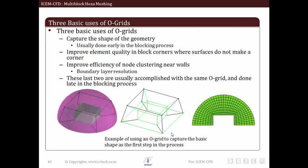Till now we have talked a lot about O-Grid. Now let us quickly see why we use O-Grid. O-Grid helps us in a lot of aspects. Number one, to capture exact shape of geometry. Secondly, we improve element quality in block corners where surfaces do not make a corner.